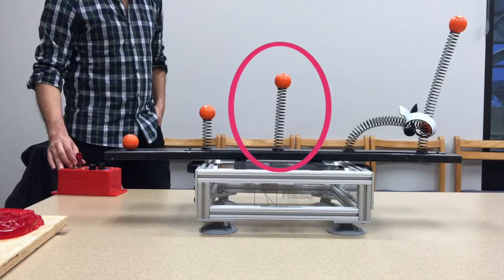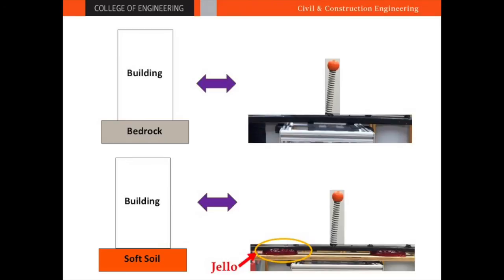In the next simulation, the mid-height building is subjected to the same shaking using different soil foundations, one with a rigid foundation such as bedrock, and the other with jello, simulating a very soft soil.